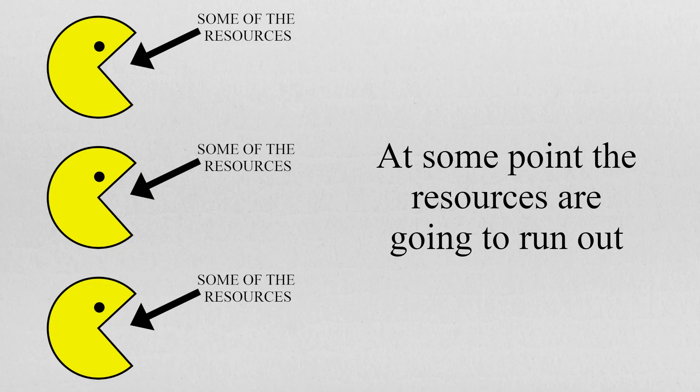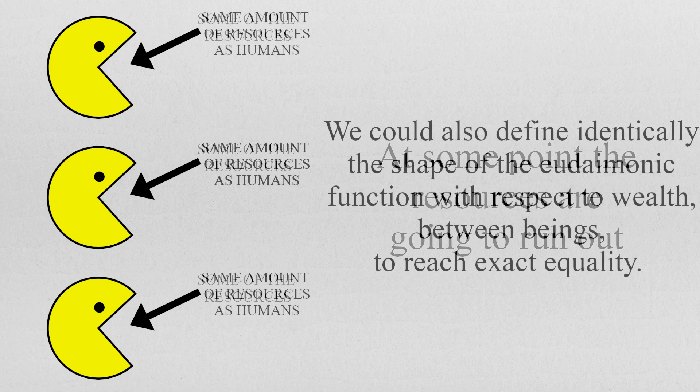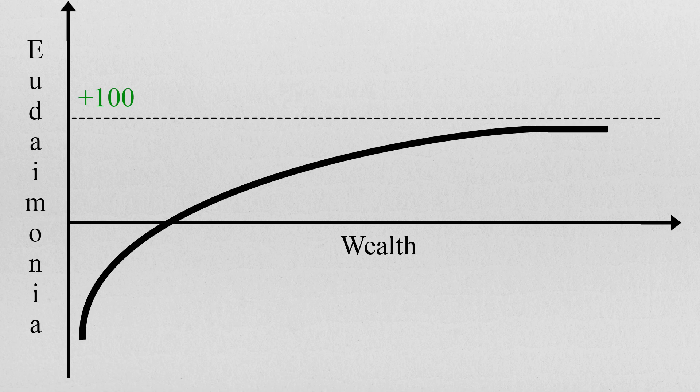So there you have it. Under this particular utilitarian model, it does not matter if the utility monsters have four times the serotonin in the brain of a human per unit resource or claim that they would be happier. They would be given the same amount of resources as anyone else, because by definition, that is how this specific utility works.